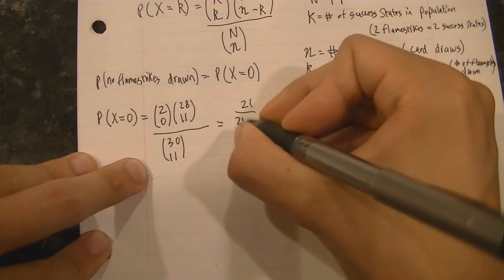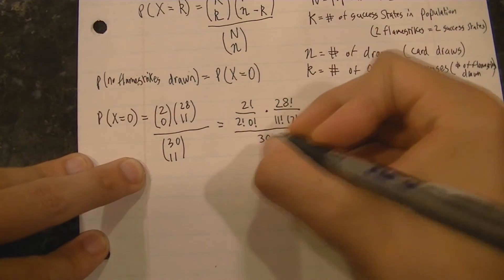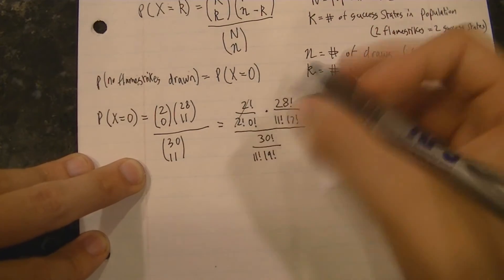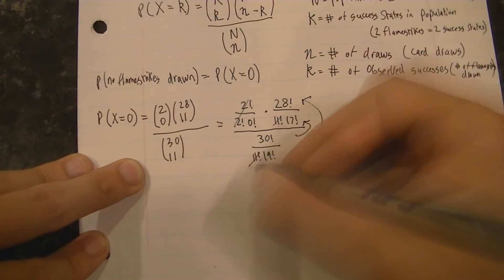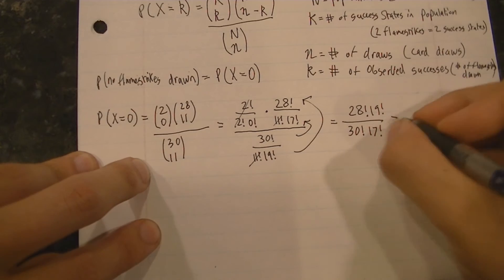and we know that the population size is 30, the number of success states in the population is 2, the number of cards drawn is 11, and the number of observed successes will be equal to zero.